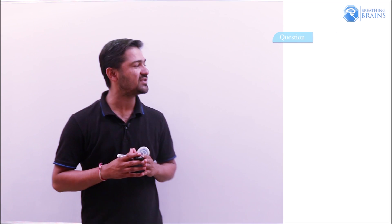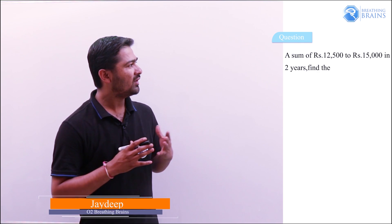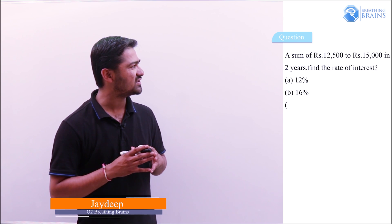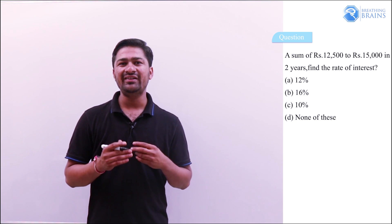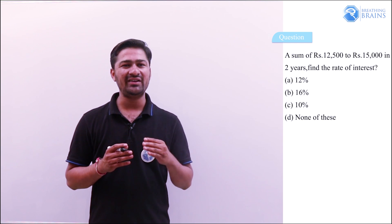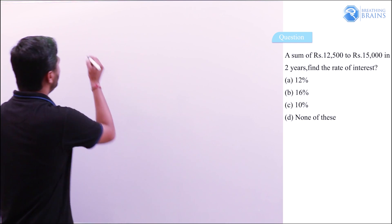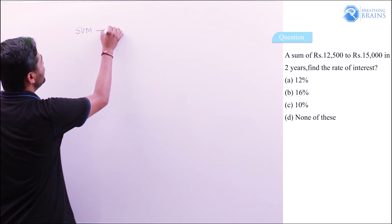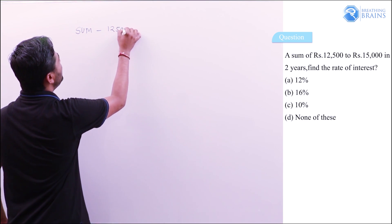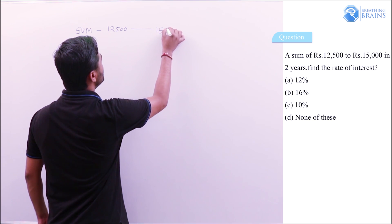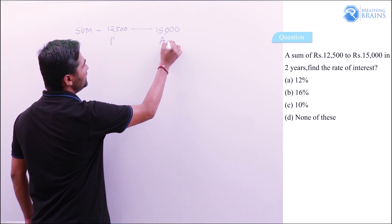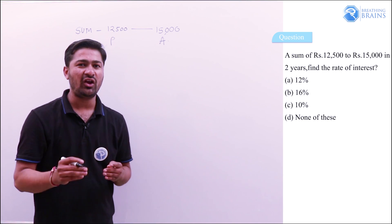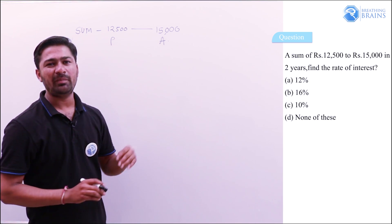The question is: a sum of ₹12,500 becomes ₹15,000 in two years — find the rate of interest. Since the type of interest is not specified, we take simple interest. A sum of ₹12,500 becomes ₹15,000, so 12,500 is the principal. The amount is ₹15,000 because interest is added into the principal.